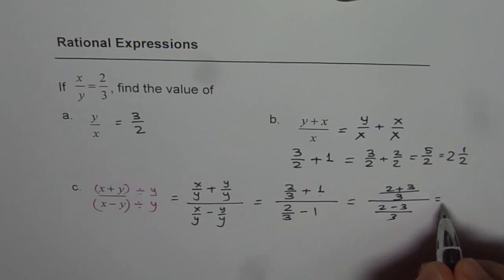So that is 5 over 3 divided by 2 minus 3, which is minus 1 over 3.